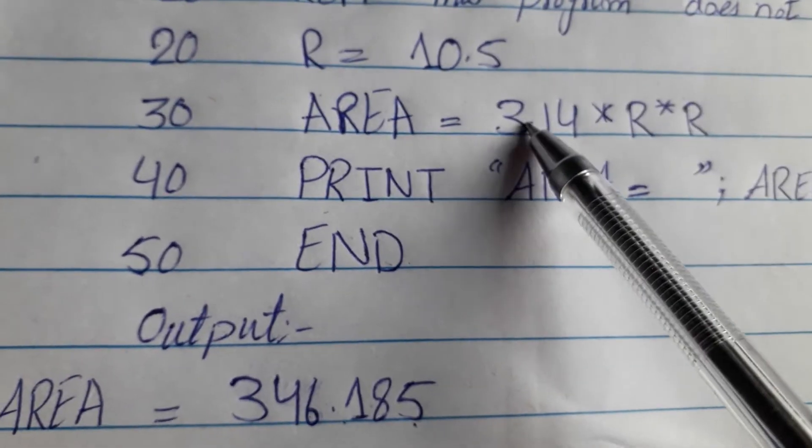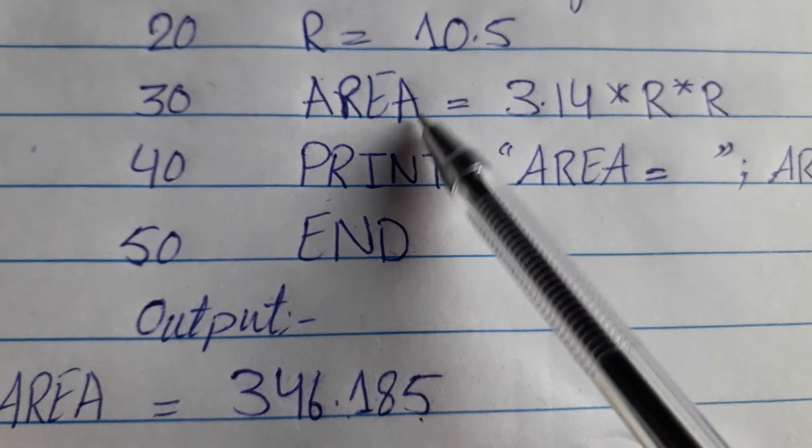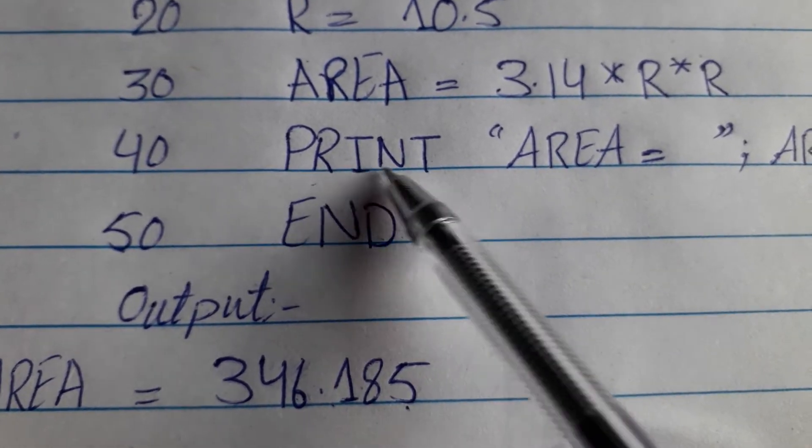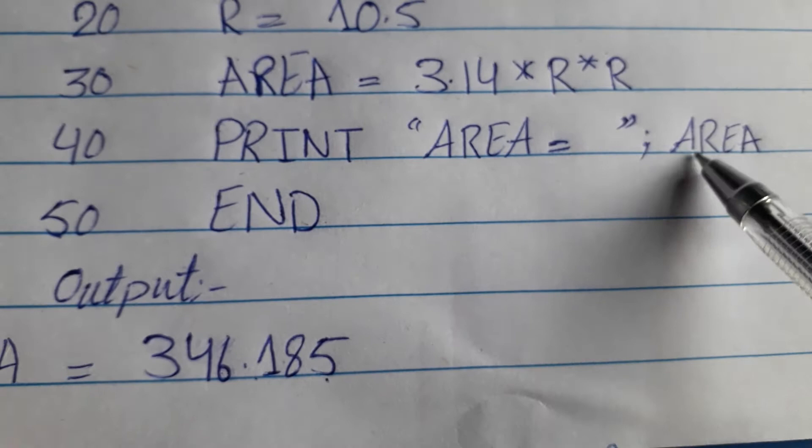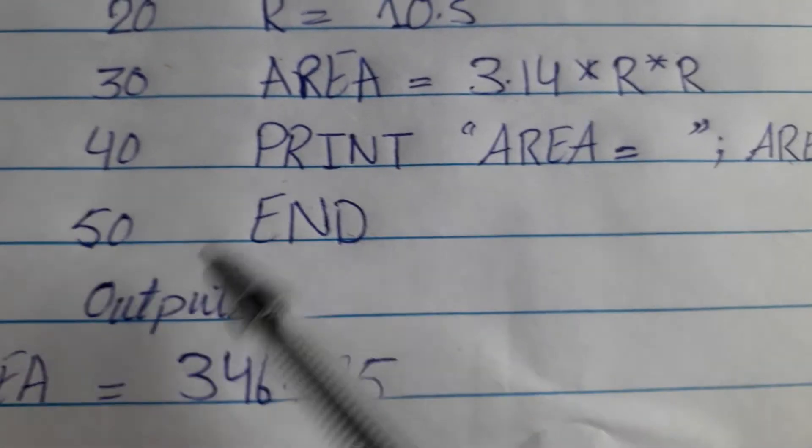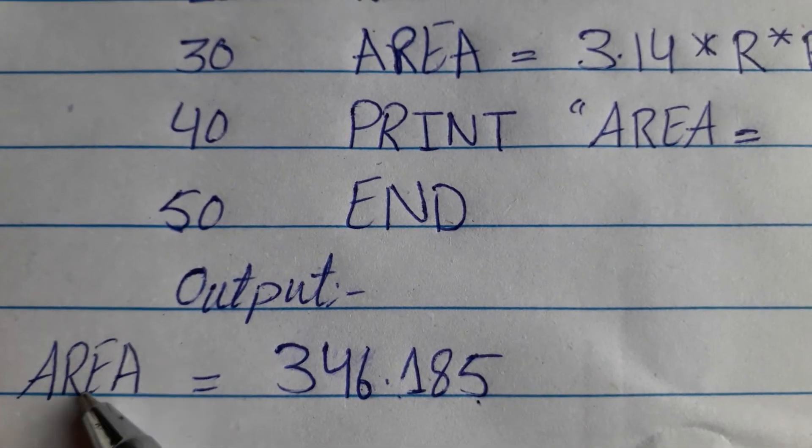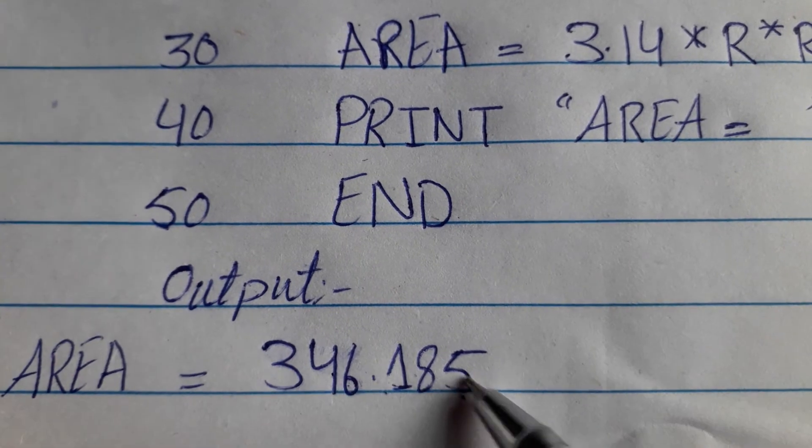Now the value here multiplied, the result was stored in the area. After we have printed it. We have printed it. The value store shows the output screen. Area is equal to 346.185.